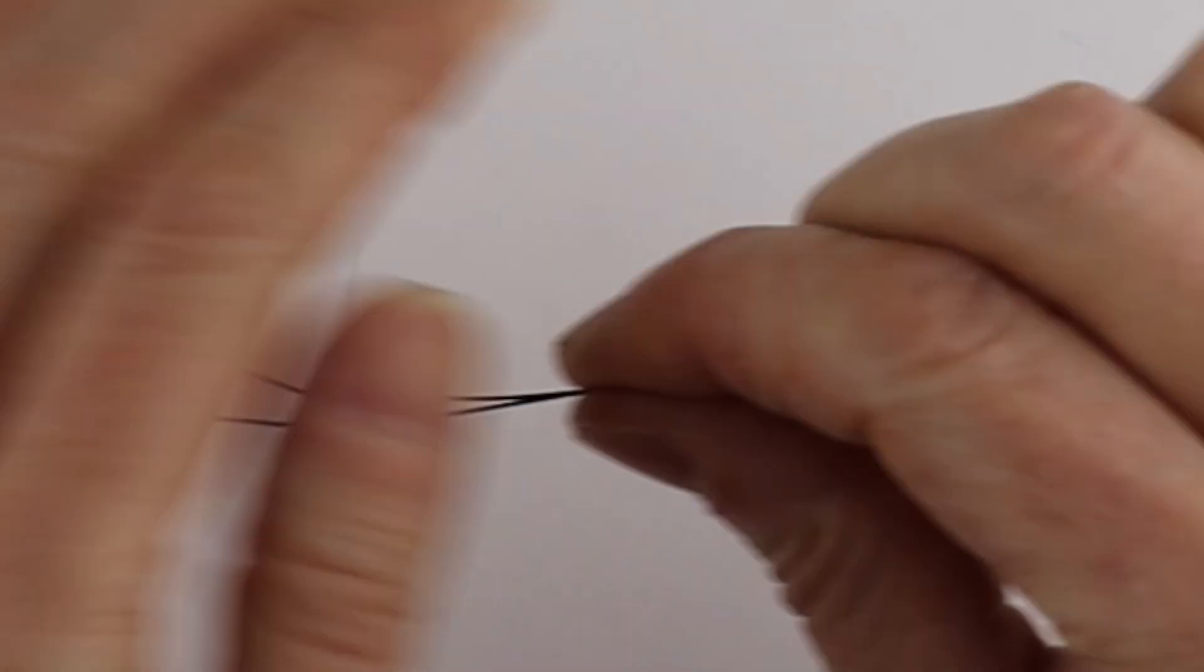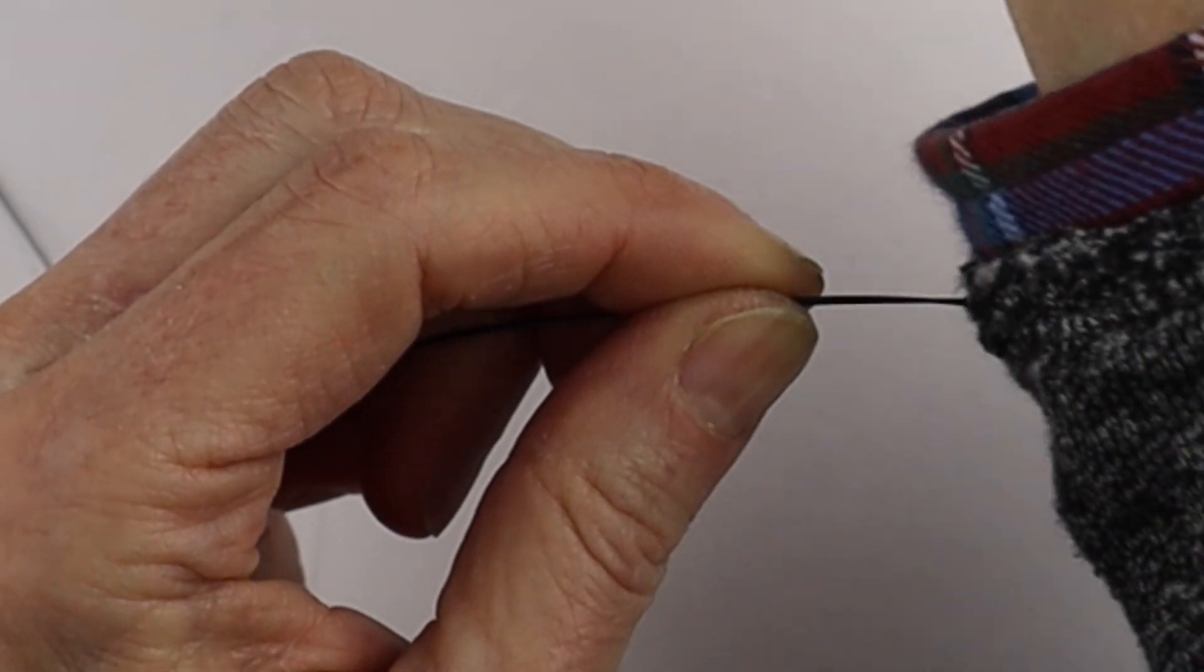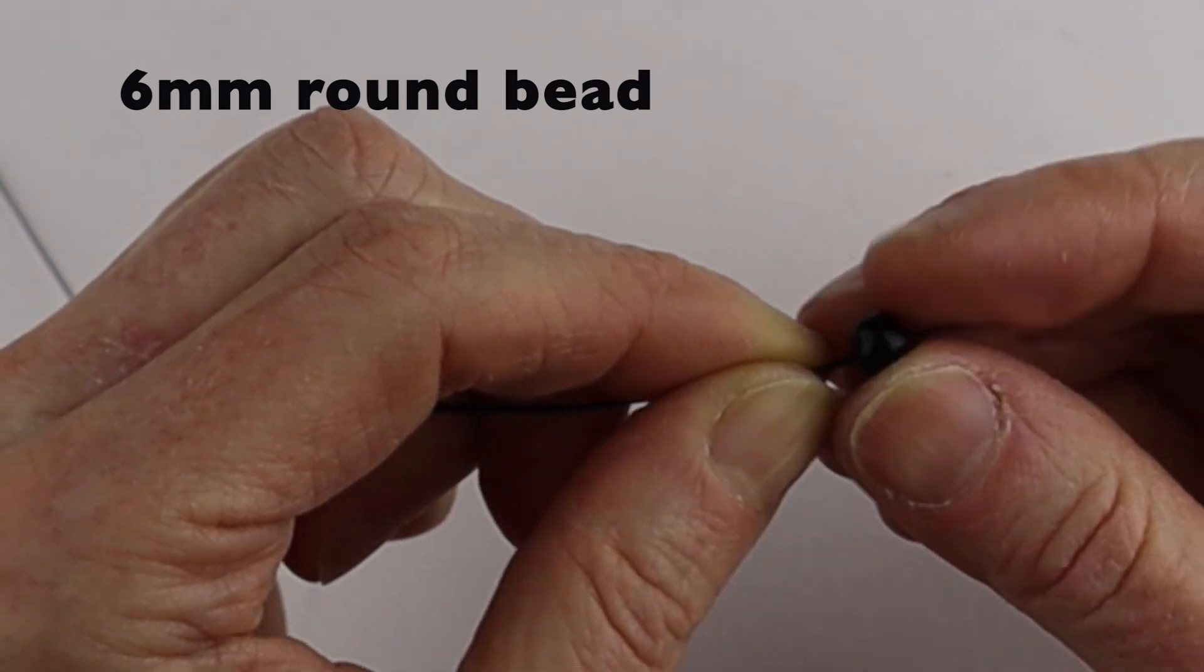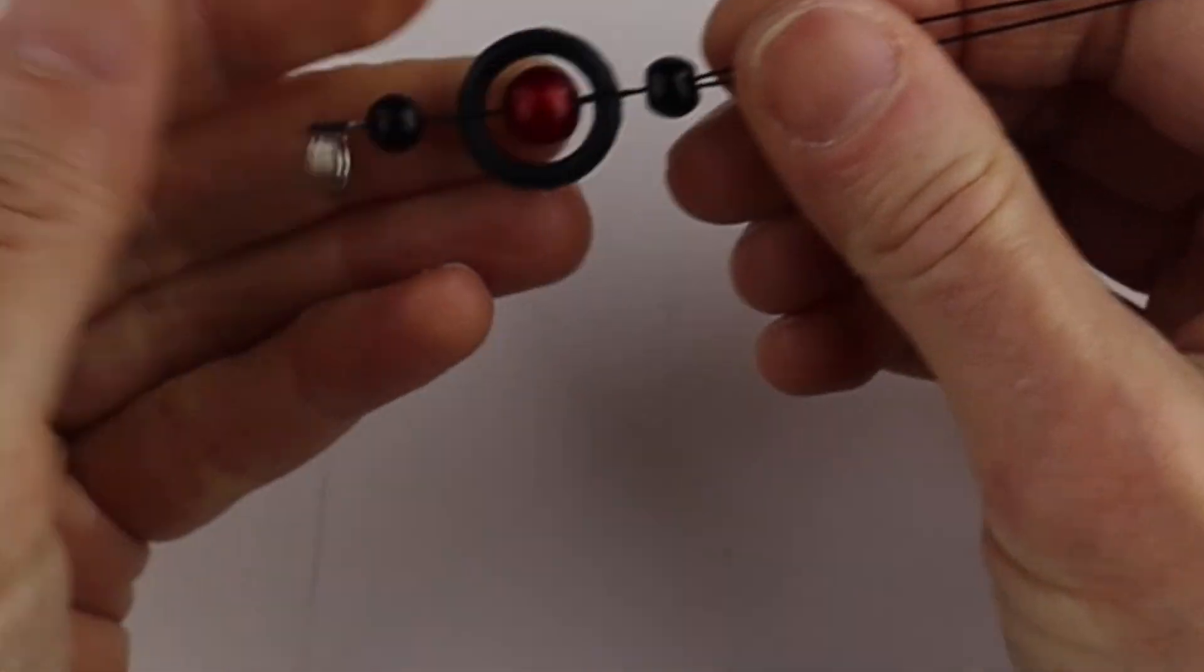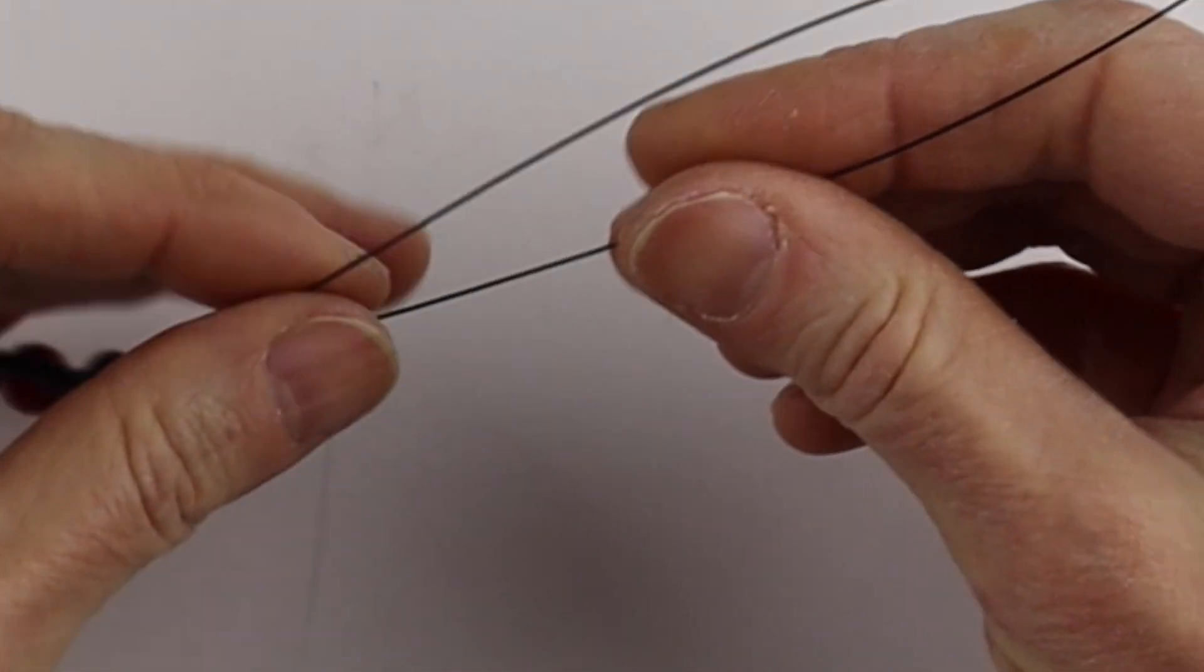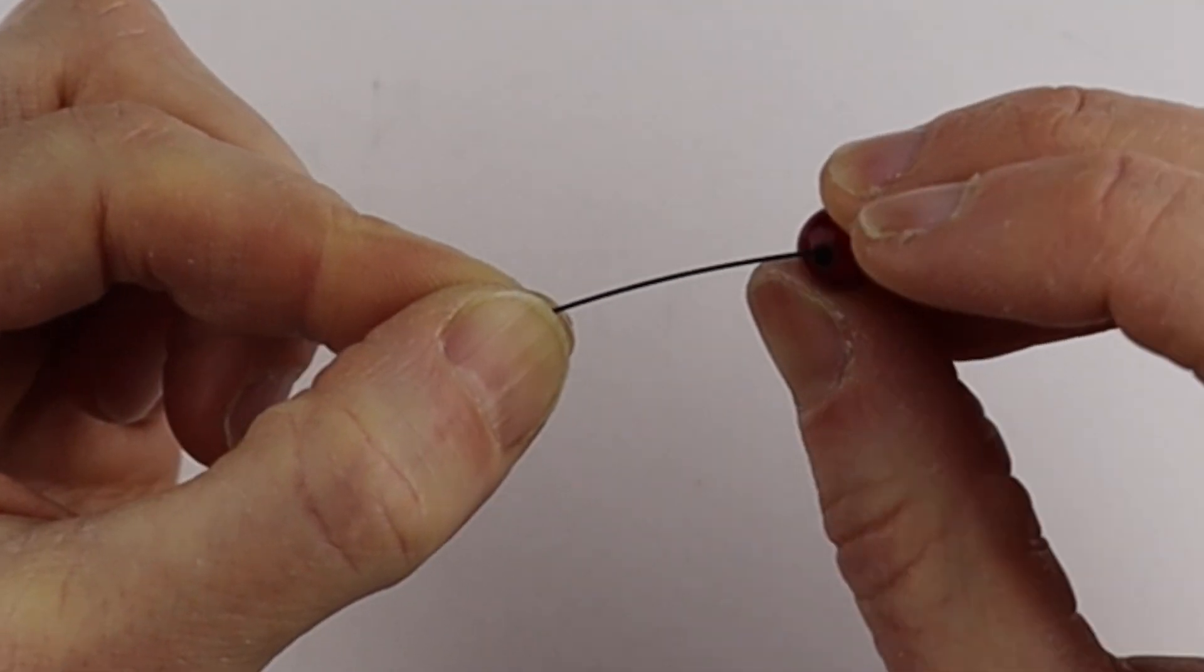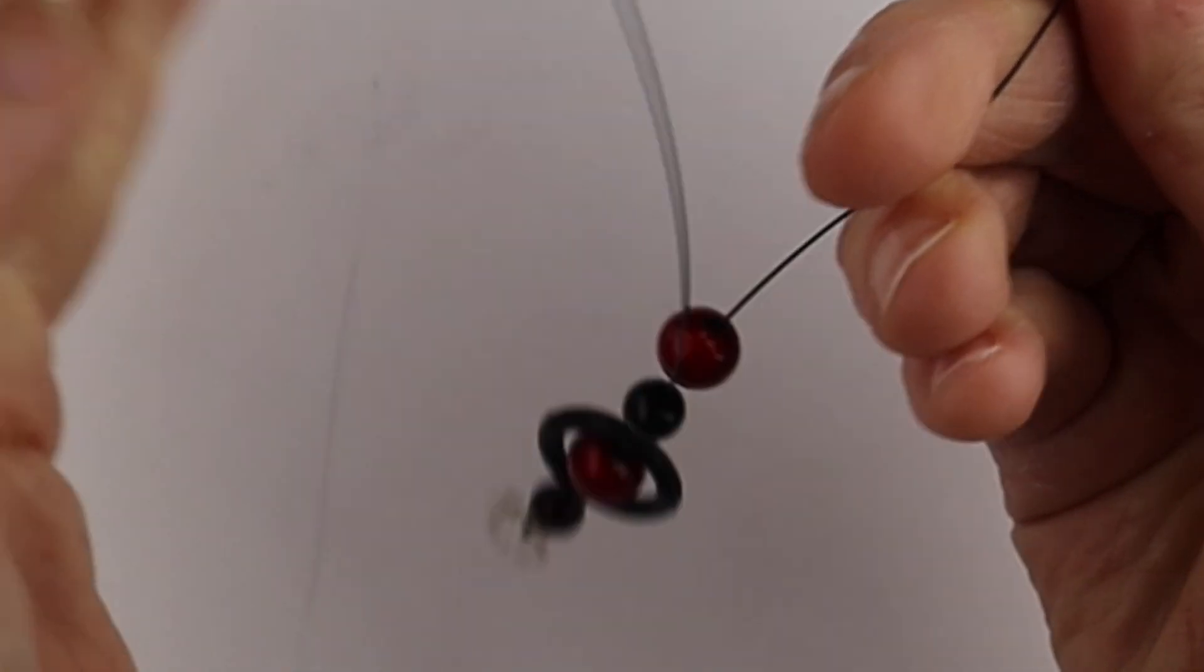Put the ends together again, get your 6 millimeter bead and stick it on both ends, bringing it down. Now repeat the same thing we did before with the bottom wire, putting the 8 millimeter miracle bead on and bringing it down to the end.